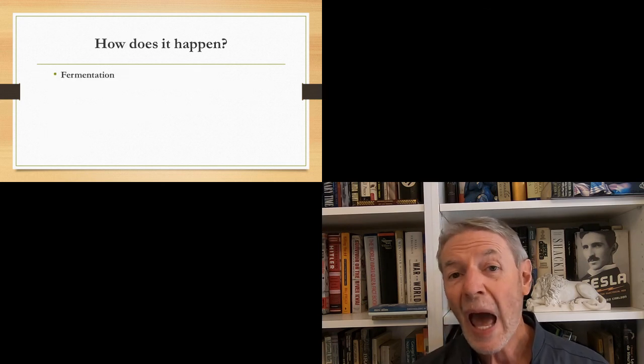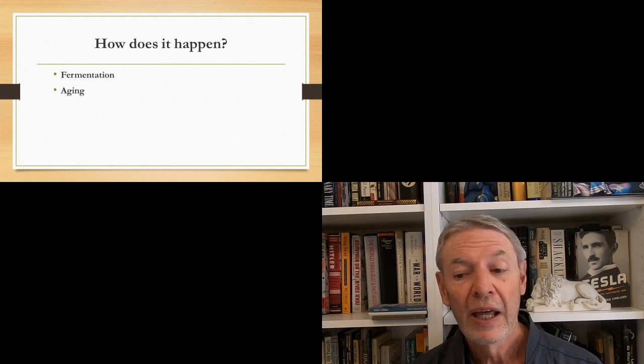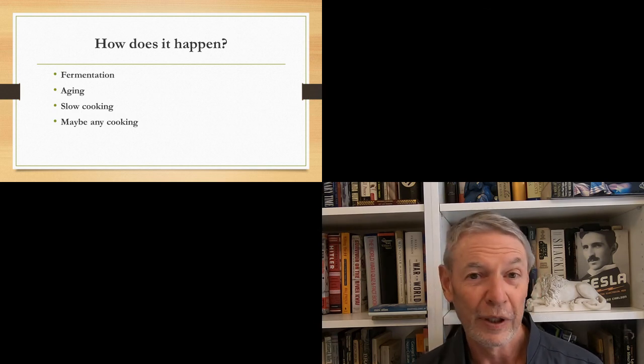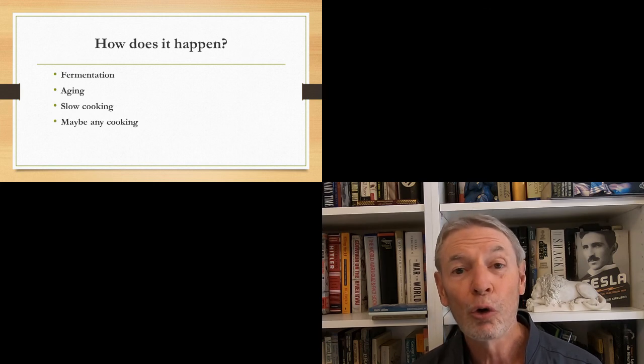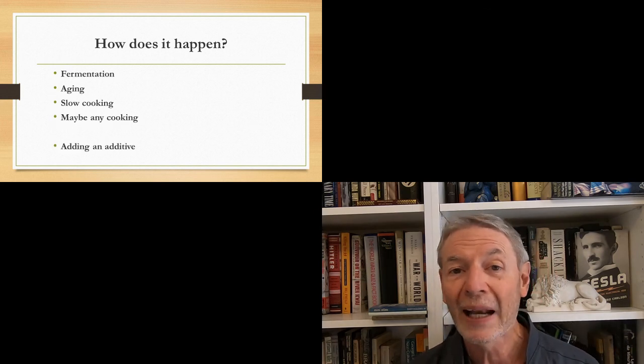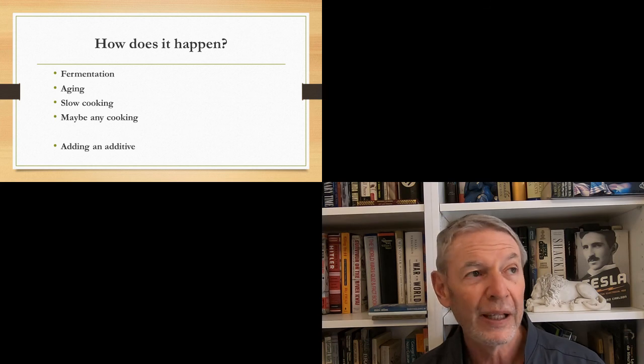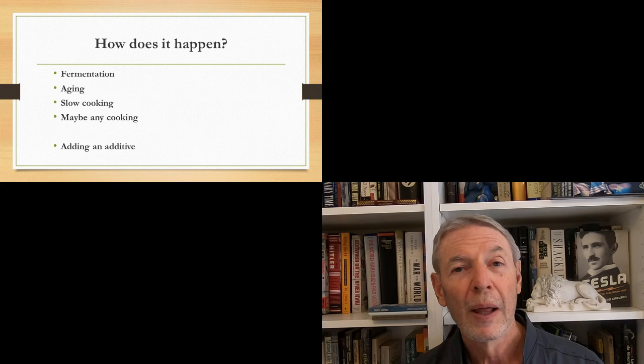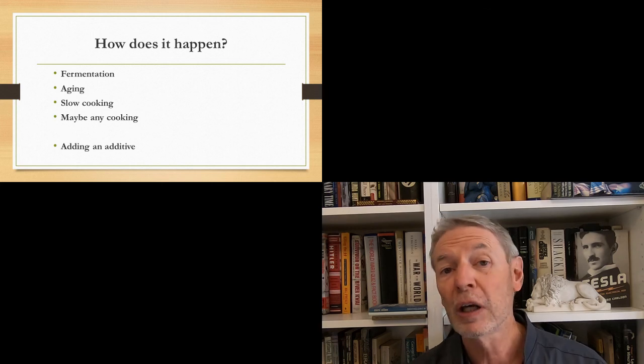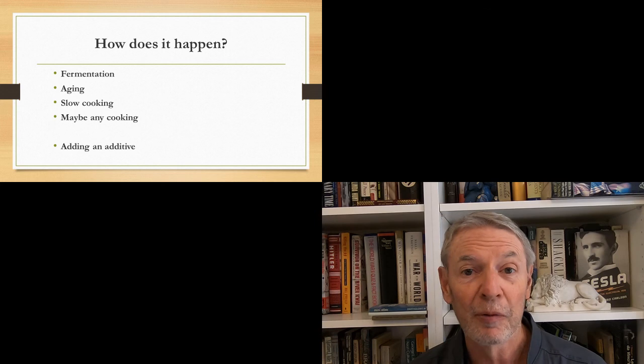Now, how does kokumi happen? It happens through fermentation, and also it happens through aging of foods. It happens through slow cooking. And you might argue that it happens through maybe any type of cooking. Maybe any type of cooking of food develops kokumi in the food or develops what you might call kokumi in the food. And if you're using kokumi as a food additive, now the additives, by the way, they don't have any taste. But when you add them to food, they are said to create kokumi. Now I haven't tried any of them. I don't know whether that's really true. But the additives themselves don't have any flavor. They supposedly add kokumi to a dish. Again, we're not talking about additives. We're talking about kokumi that is naturally occurring in foods and it occurs from fermentation, aging, slow cooking, and maybe any type of cooking.